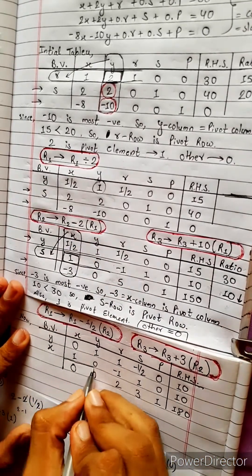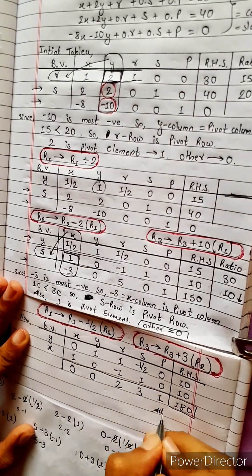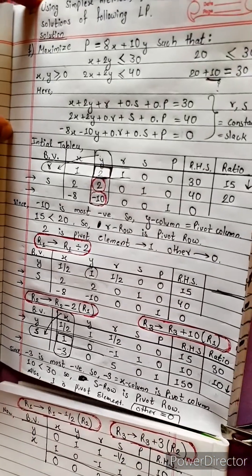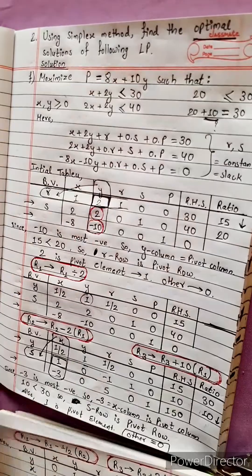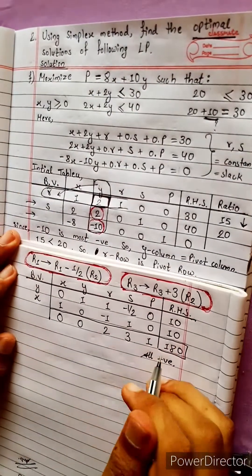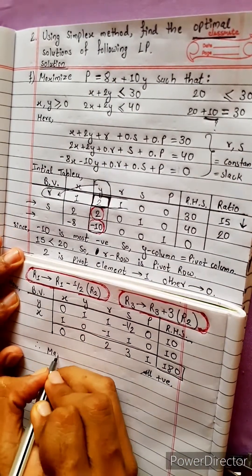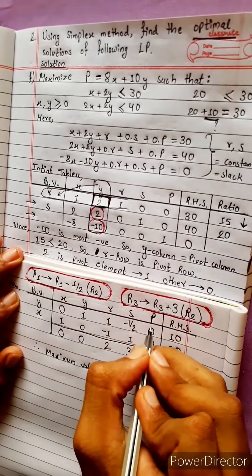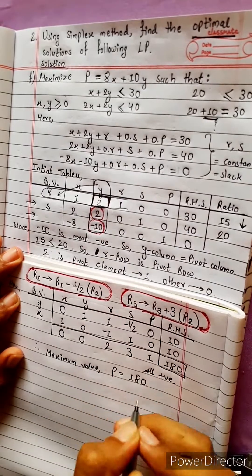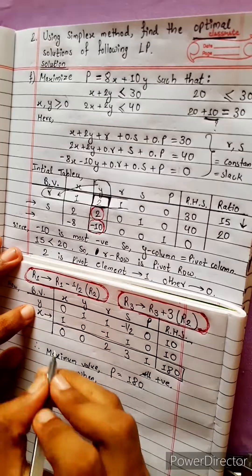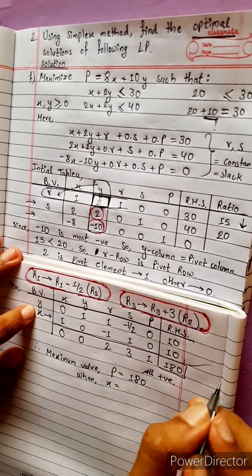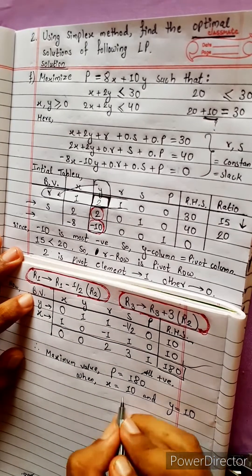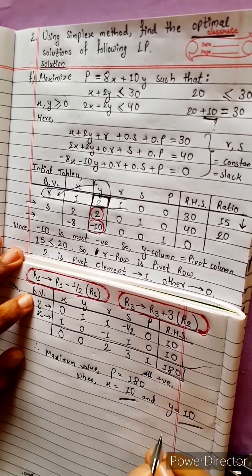All values in the last row are positive. The optimal solution is obtained. Therefore, the maximum value of P equals the computed value, when x equals 10 and y equals 10. All the answers are correct.